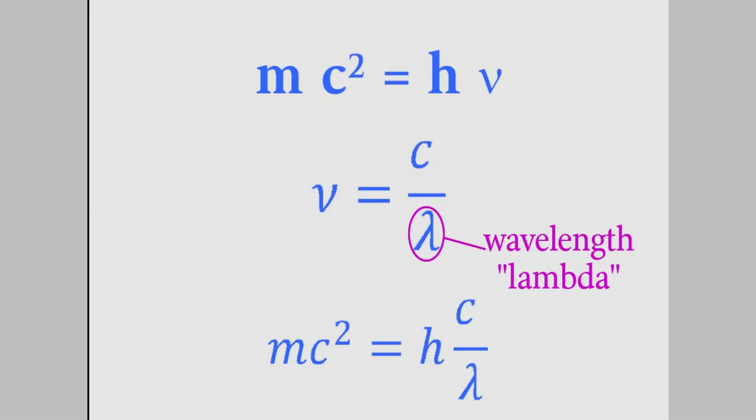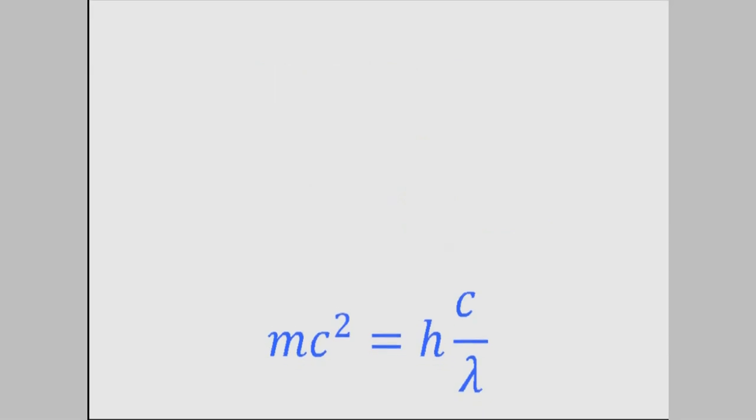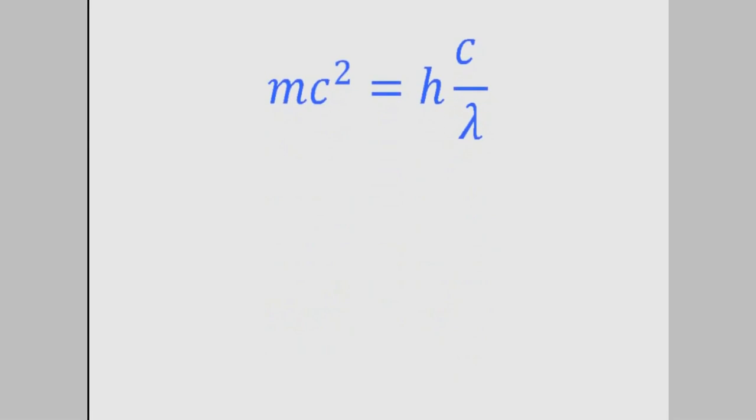So let's put that in now for the frequency. If de Broglie was right that a particle can act like a wave, now we can figure out its wavelength. We just need to get lambda, the wavelength, all by itself in this equation.